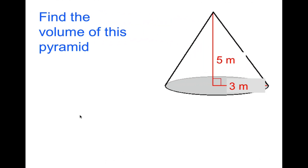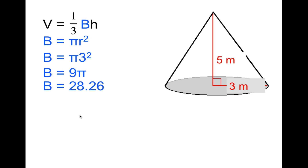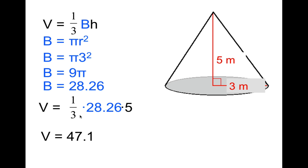Now you do one. Find the volume of this cone using V = (1/3) × B × H. Pause the video and work out the problem, then check back for the solution. The base is a circle, so B = π r². The radius is three, so π × 3² = 9π ≈ 28.26 square meters. Plugging in: V = (1/3) × 28.26 × 5. Through the calculator, the volume equals approximately 47.1 cubic meters.